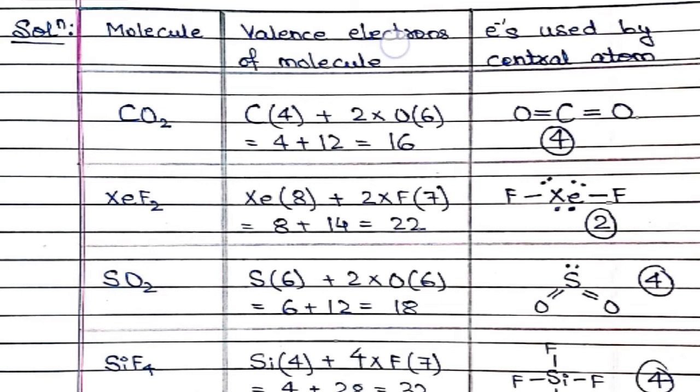The electrons used by the central atom should be 25 percent of the valence electrons, and that would be our correct option. Let's talk about carbon dioxide. In carbon dioxide, the central atom carbon has four valence electrons, plus oxygen has six, but there are two oxygens, so total would be twice of that. The total valence electrons would be 4 + 12 = 16.